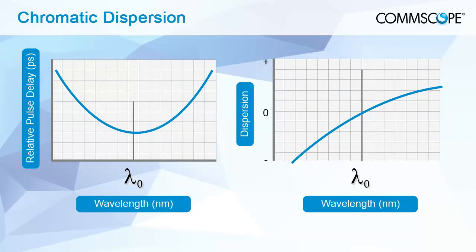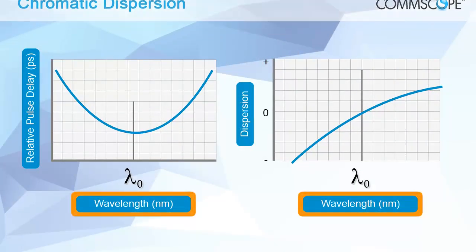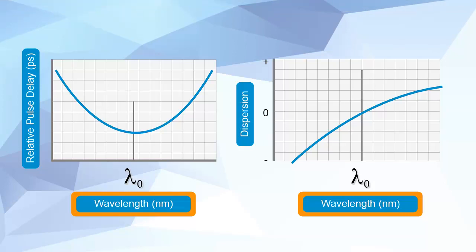The zero dispersion wavelength expressed in nanometers is defined as a wavelength with a chromatic dispersion equal to zero. Operating at this wavelength does not exhibit chromatic dispersion, but typically presents issues arising from the optical non-linearity and the four-wave mixing effect in DWDM systems.